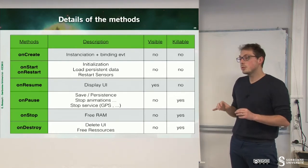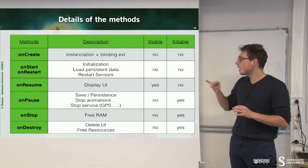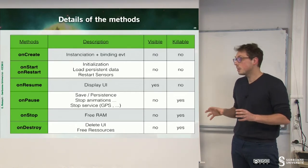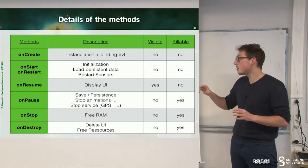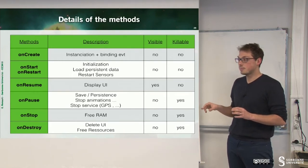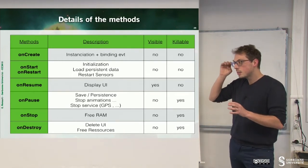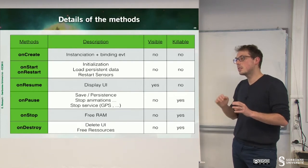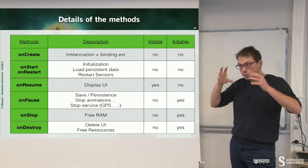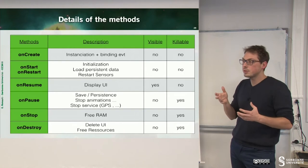Then, on the onStop method, you have to free the RAM, and then, you delete the UI and free resources. You can log things inside of this different method, in order to understand the behavior of your application.